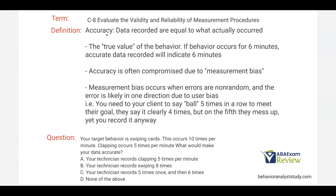Now, accuracy. Accuracy says data are recorded equal to what actually occurred, meaning you're just marking down the true value. If the behavior occurs six minutes, accurate data will indicate six minutes. Accuracy is that straightforward. However, accuracy is often compromised due to measurement bias. The key with measurement bias is that these errors are non-random — they don't happen by chance; they happen due to a bias. So if I need my client to say 'ball' five times in a row to meet a goal, they say it four times but on the fifth they mess up, yet I measure five times correct anyway — that data aren't accurate and measurement bias is occurring.